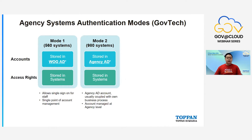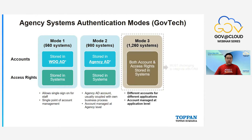There are three modes of authentication for agency systems. The difference between these modes is the location where accounts are stored. For Mode 1, accounts are stored in WOG AD. For Mode 2, accounts are stored in Agency AD, which usually establishes a one-way forest trust to WOG AD — though GovTech is phasing out one-way forest trust in the future. For Mode 3, there is no AD integration and both accounts and access rights are stored in the system itself.